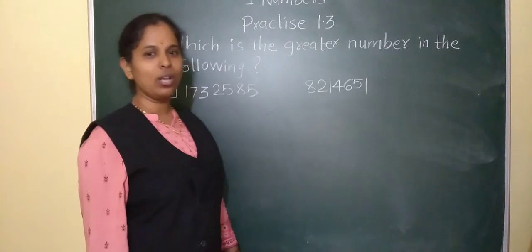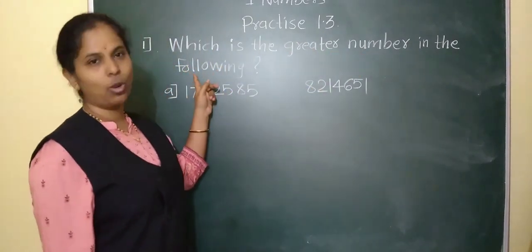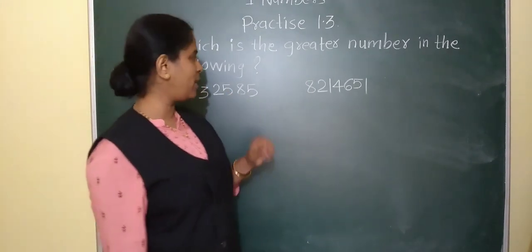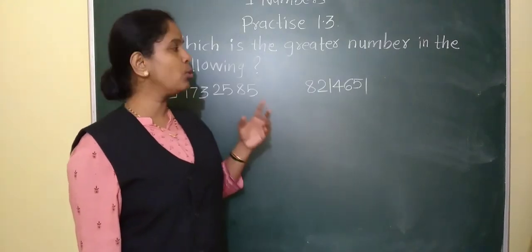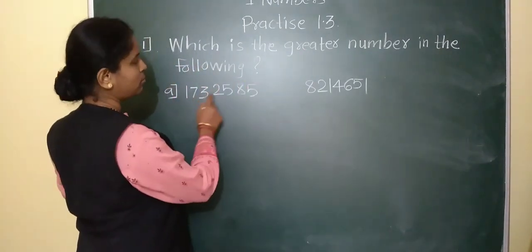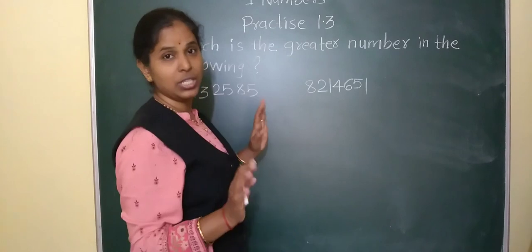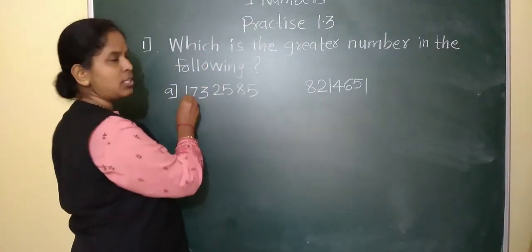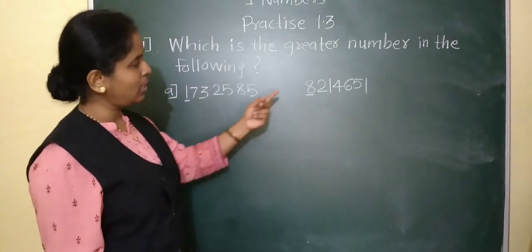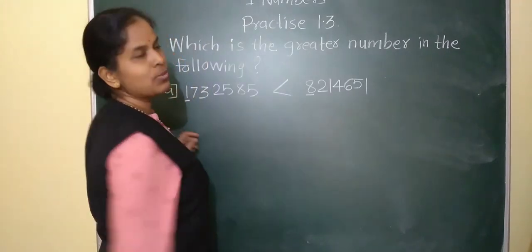Now we will solve Practice 1.3. Question 1: which is the greater number in the following? Two numbers are given and we have to compare them. First, we count the digits — both have 7 digits. So we compare digits from the left side. Here 1 is there and here 8 is there. Since 8 is the greater digit, this number is greater than the other. We write it using the greater than sign.